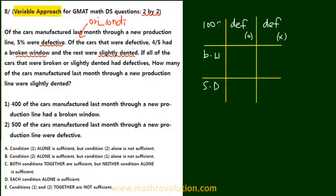Now if we'll call 100c for the total, then we have 5c for defective and 95c for non-defective, which means that we have 5c times 4 over 5 for broken window, 5c times 1 over 5 for slightly dented. If all of the cars that were broken or slightly dented had defectives, it means that over here on the right side we have zeros. We have one variable, c.